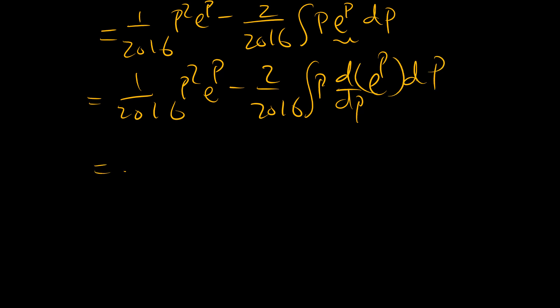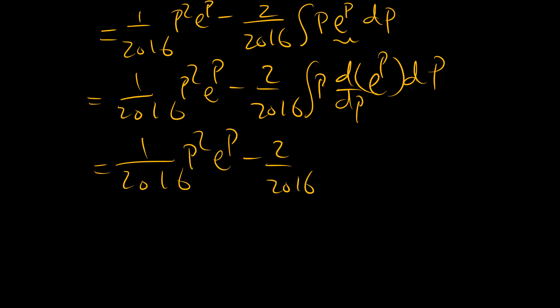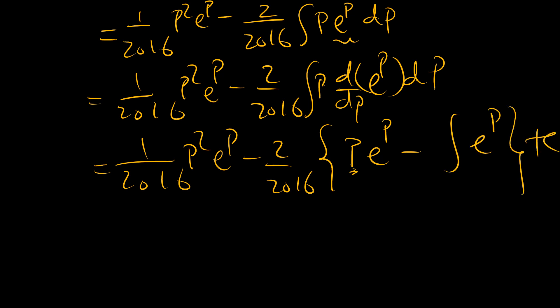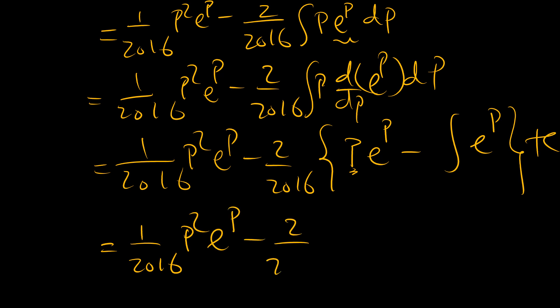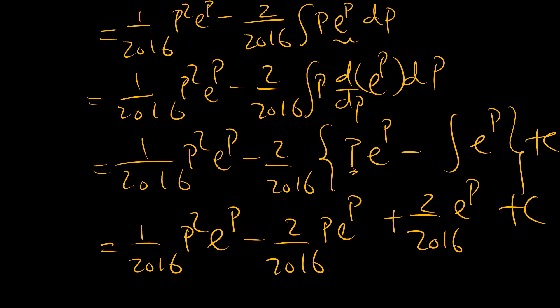We use integration by parts again on the remaining integral. We have 2 over 2016 times the quantity p times e to the power p minus the integral of e to the power p dp. The integral of e to the power p is just e to the power p plus c. So collecting everything, we have 1 over 2016 times p squared times e to the power p, minus 2 over 2016 times p times e to the power p, plus 2 over 2016 times e to the power p, plus the integration constant.